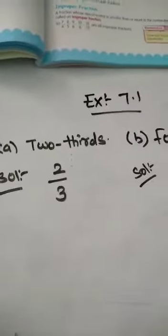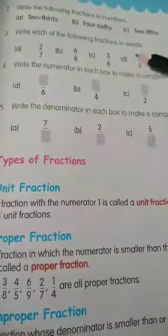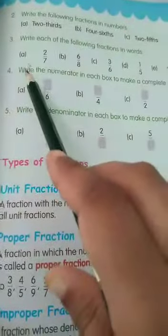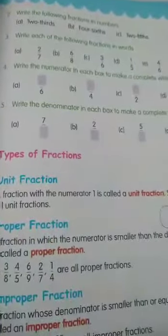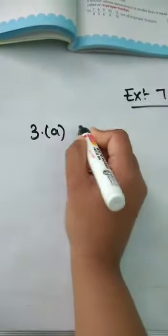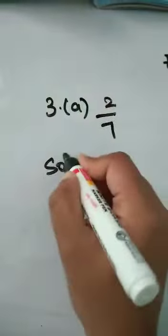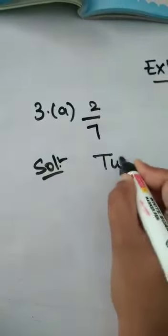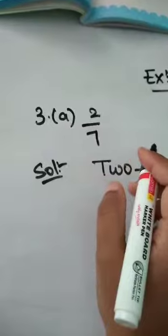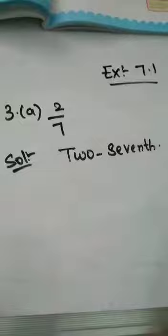Let us do the third bit. Here, third bit: write each of the following fractions in words. So in second bit we wrote fractions in numbers; here we have to write fractions in words. Third bit, first question: 2 by 7. So words means 2 by 7 — we have to write 2 seventh.